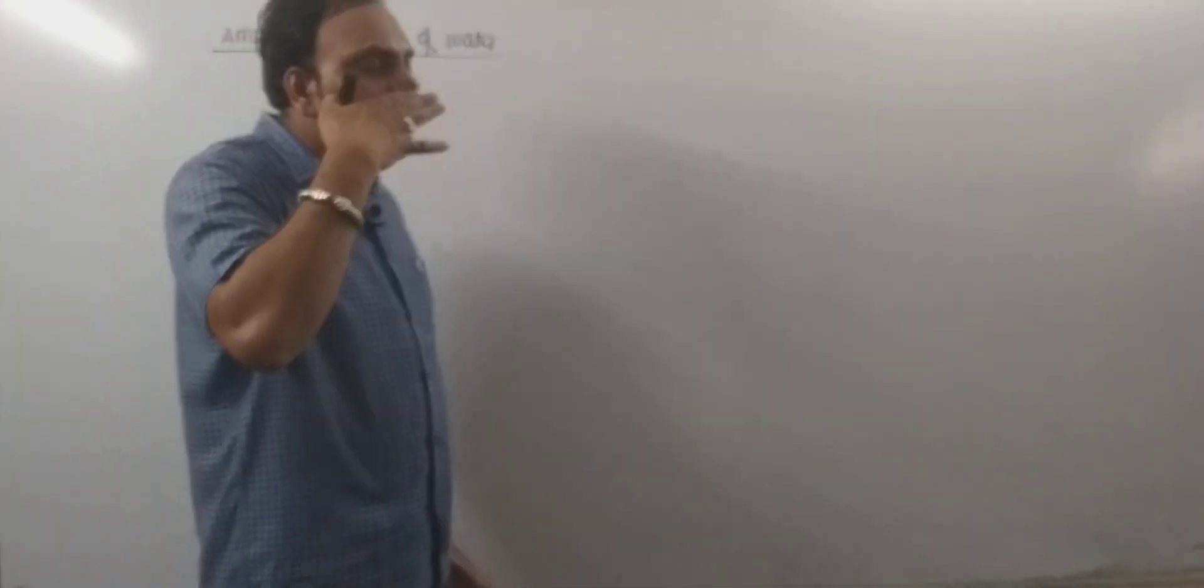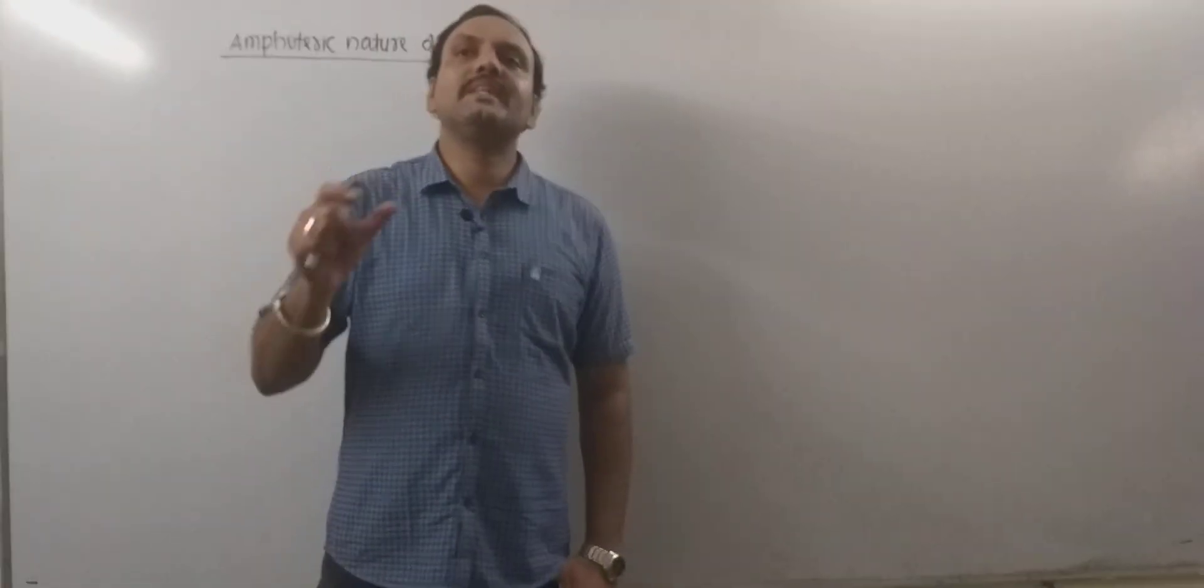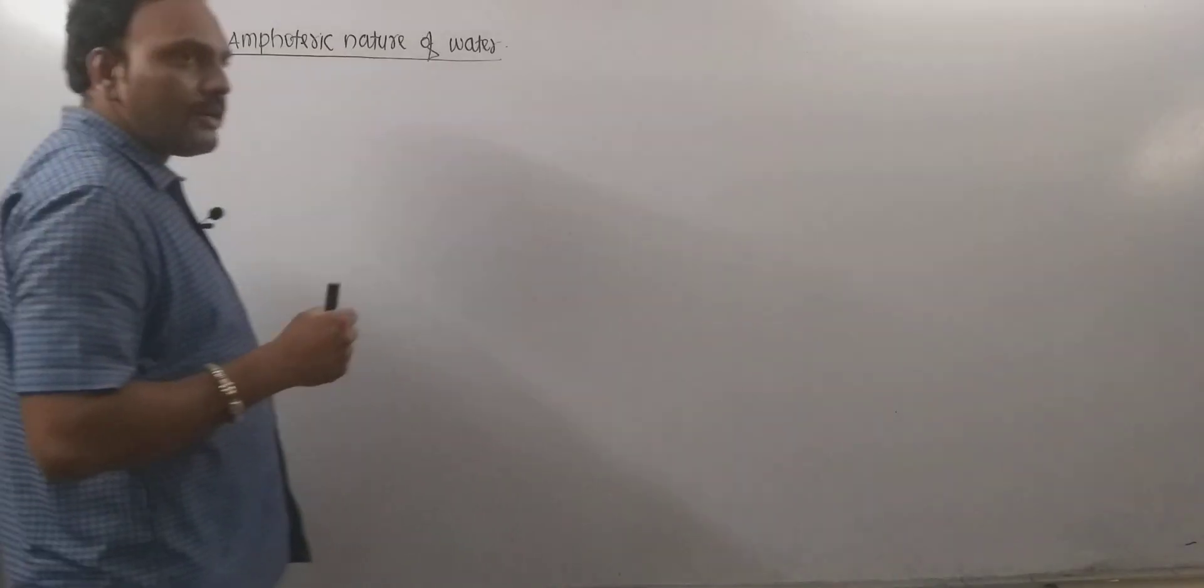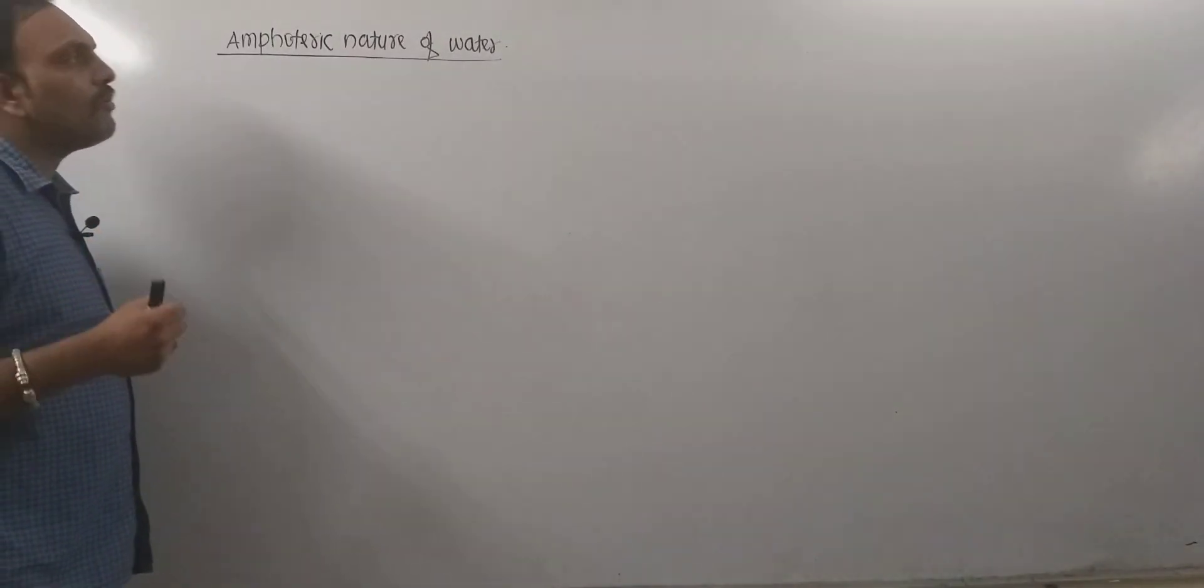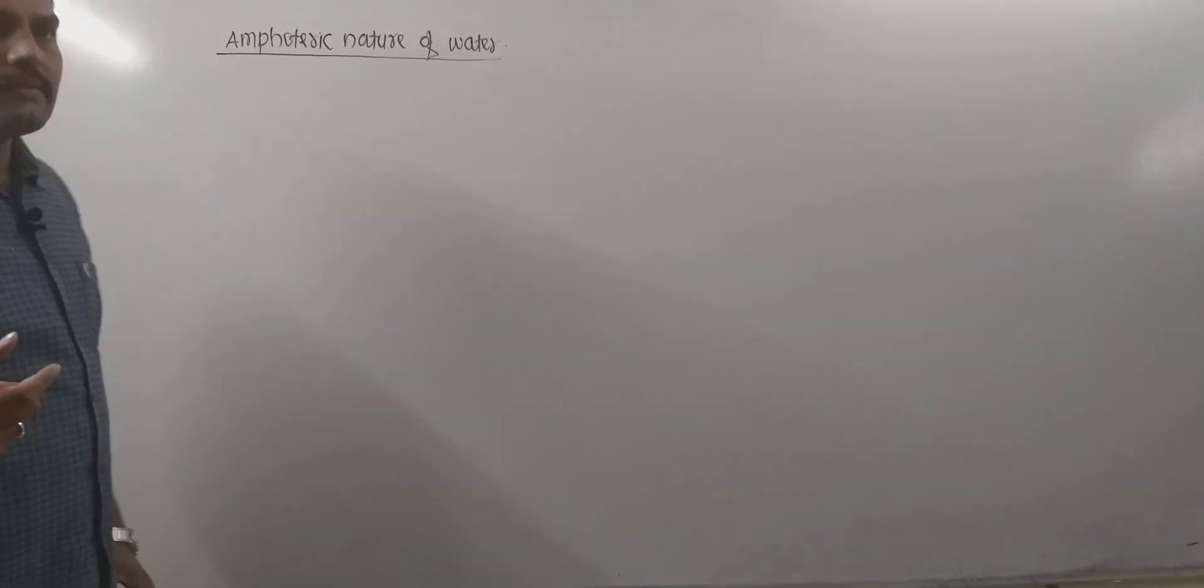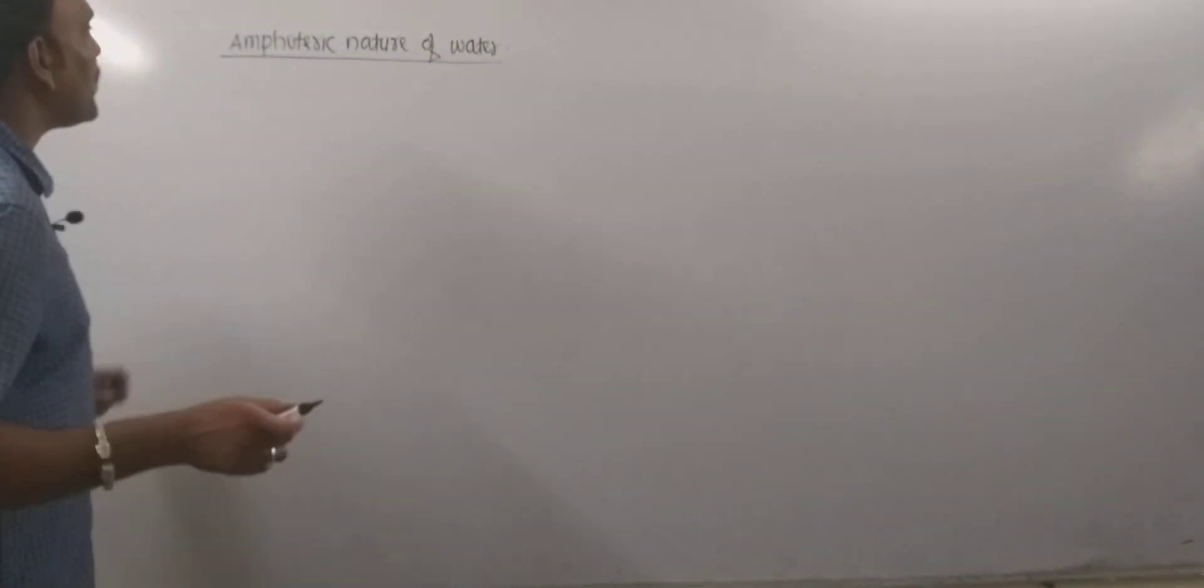Those substances are said to be amphoteric which are capable of acting as acid as well as base. Water is amphoteric in nature. To explain amphoteric nature of water, we may take help of the Bronsted-Lowry concept. Take a look.